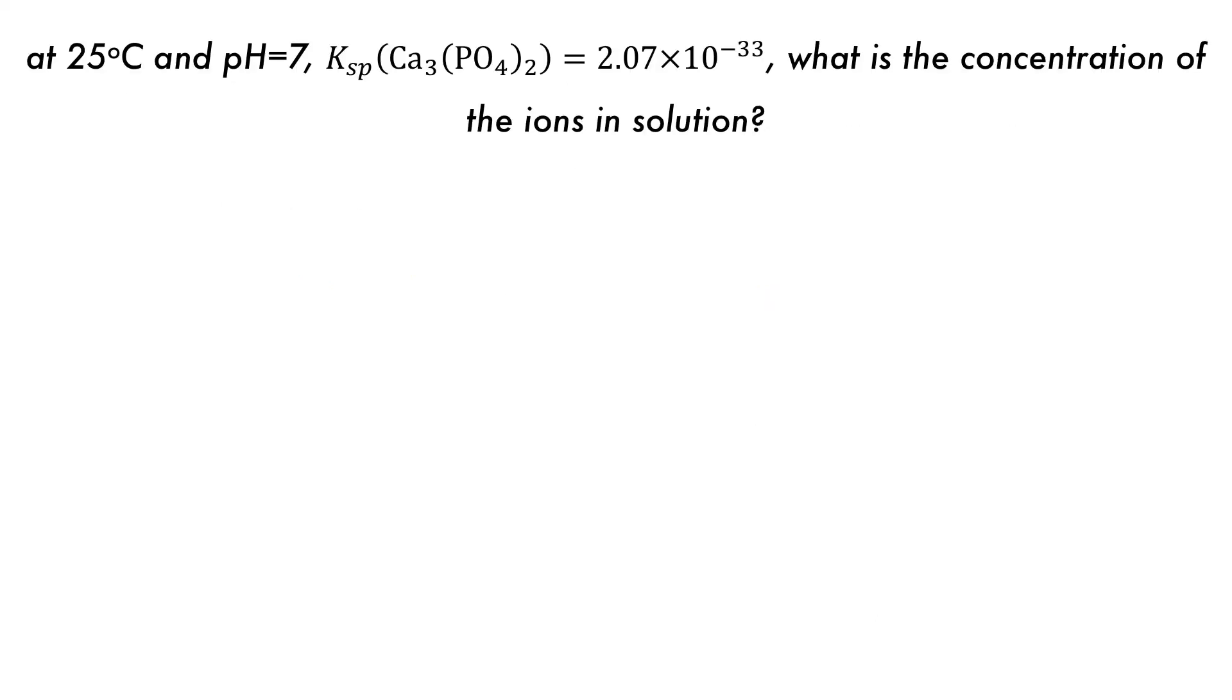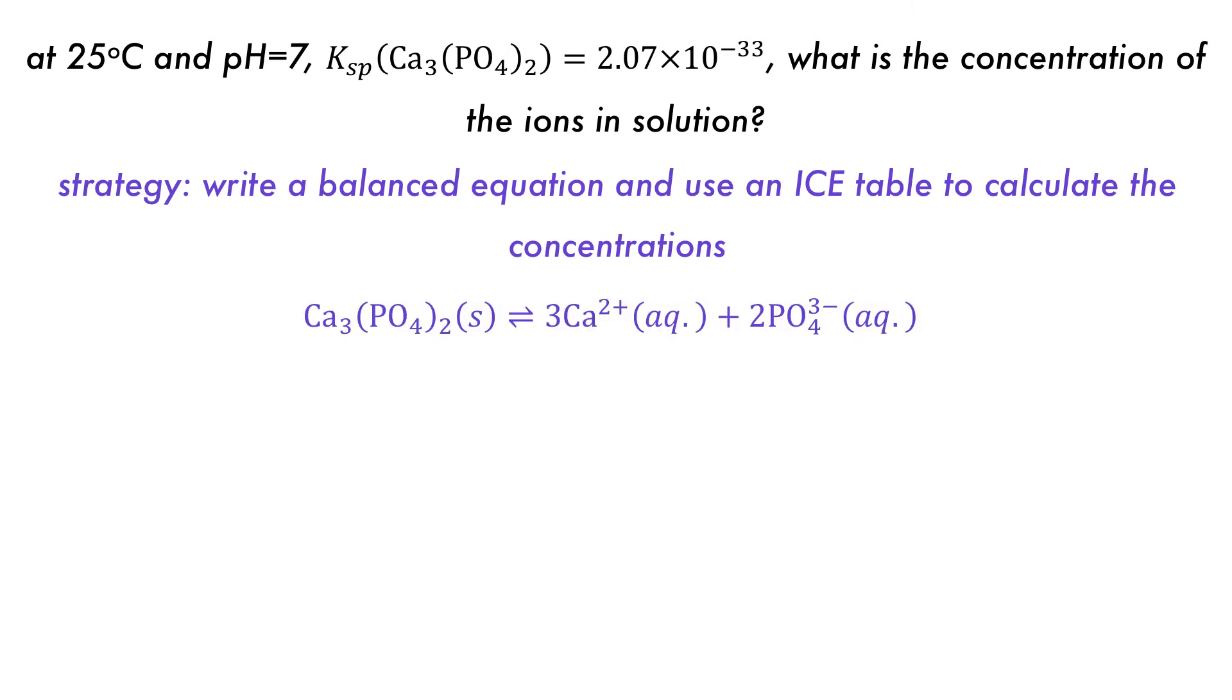Let's look at an example of how to calculate the maximum concentration of a sparingly soluble salt in water. The strategy for this question is to first write a balanced equation for the equilibrium, and then to write an ICE table for the changes during the dissolution process.